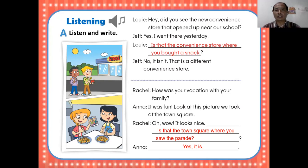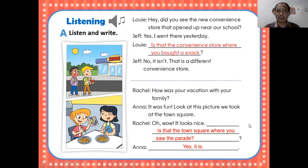Bagian kedua Rachel bertanya sama Ana: 'How was your vacation with your family?' Ana menjawab: 'It was fun. Look at this picture we took at the town square.' Kemudian Rachel mengatakan: 'Oh wow, it looks nice.' Pertanyaan yang warna merah: 'Is that the town square where you saw a parade?' — 'Yes, it is.' Jawabannya 'yes, it is' karena pertanyaannya menggunakan 'is,' maka jawabannya harus juga 'is.' Bukan 'yes, it does' dan bukan 'yes, I am.'